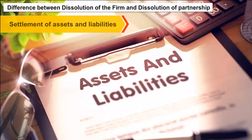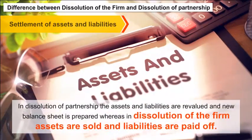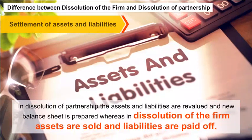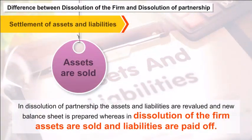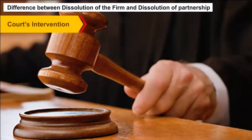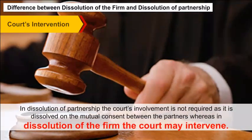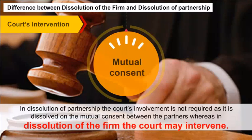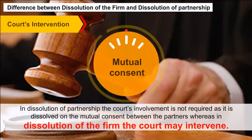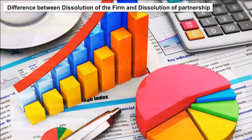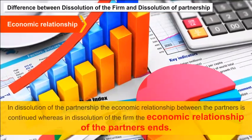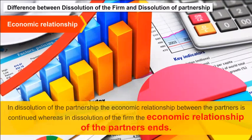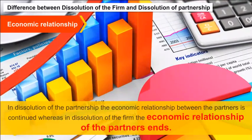Settlement of assets and liabilities: In dissolution of the partnership, the assets and liabilities are revalued and a new balance sheet is prepared, whereas in dissolution of the firm, assets are sold and liabilities are paid off. Court's intervention: In dissolution of partnership, the court's involvement is not required as it is dissolved on mutual consent between the partners, whereas in dissolution of the firm, the court may intervene. Economic relationship: In dissolution of the partnership, the economic relationship between the partners is continued, whereas in dissolution of the firm, the economic relationship of the partners ends.